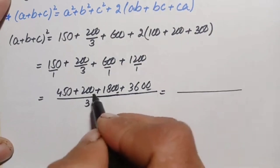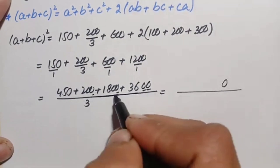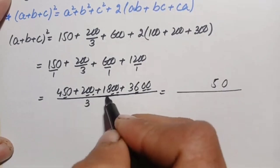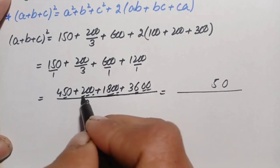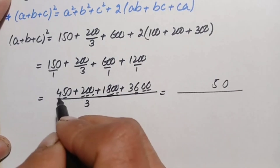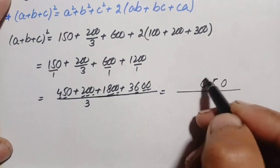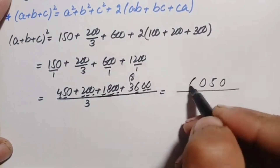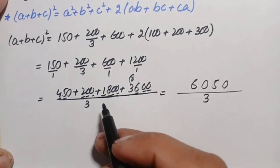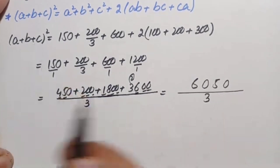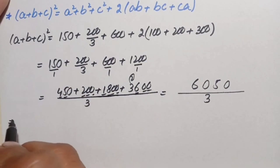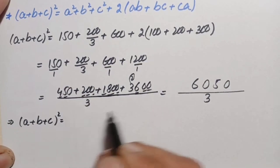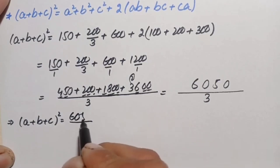Adding all these numerators: 450 plus 200 plus 1800 plus 3600. Working through the addition digit by digit gives 6050. So (a + b + c)² equals 6050 divided by 3.